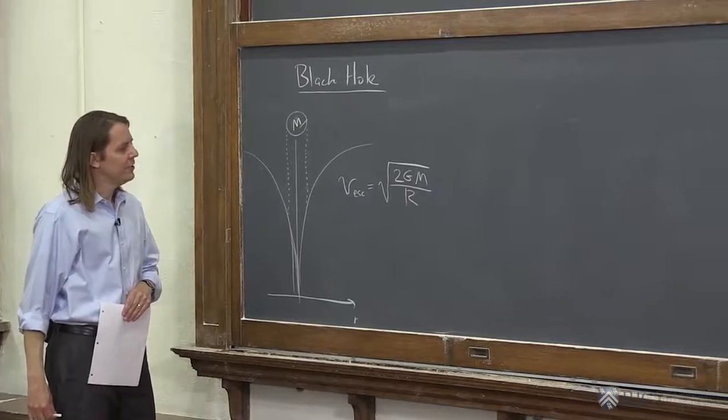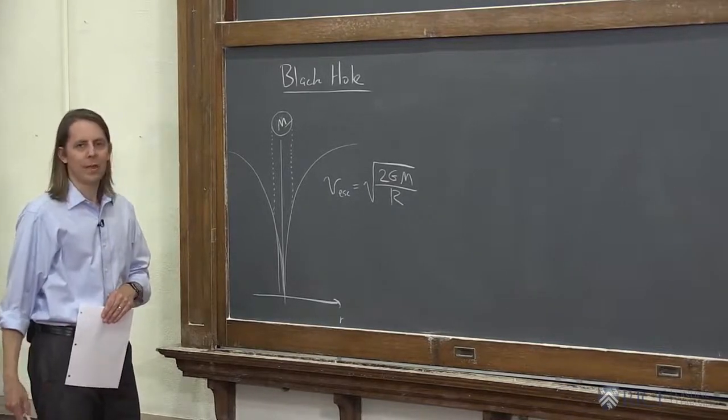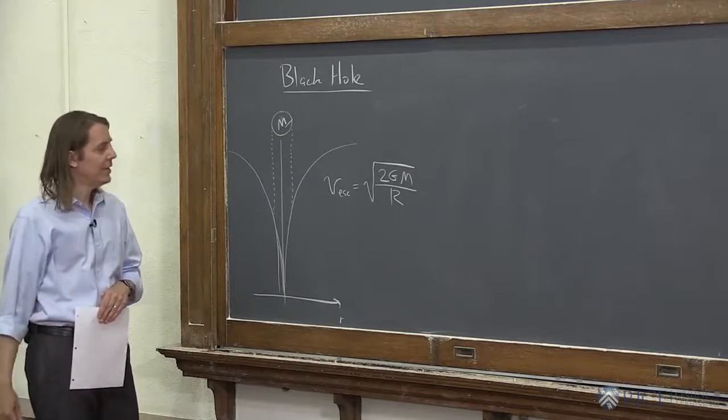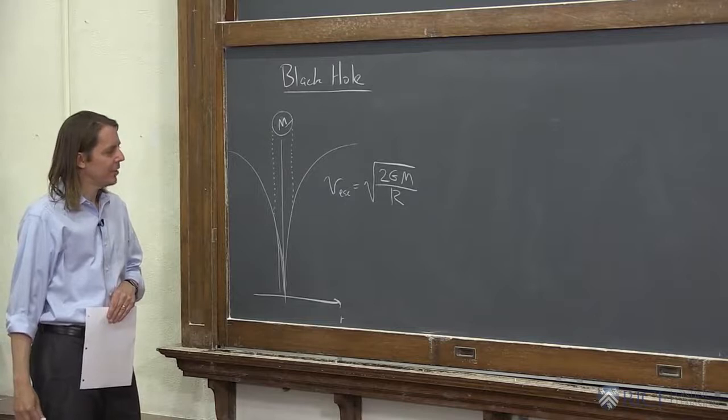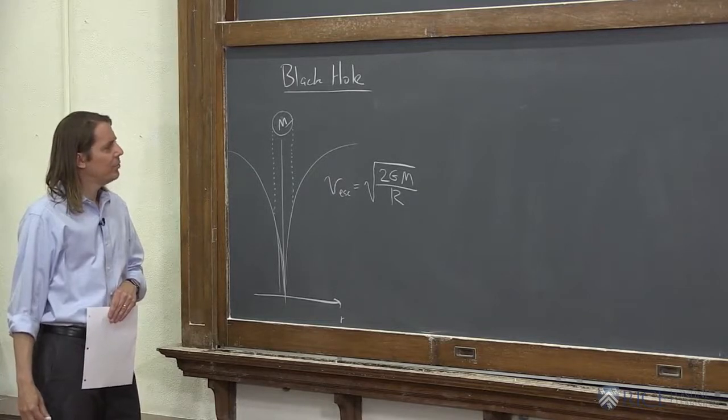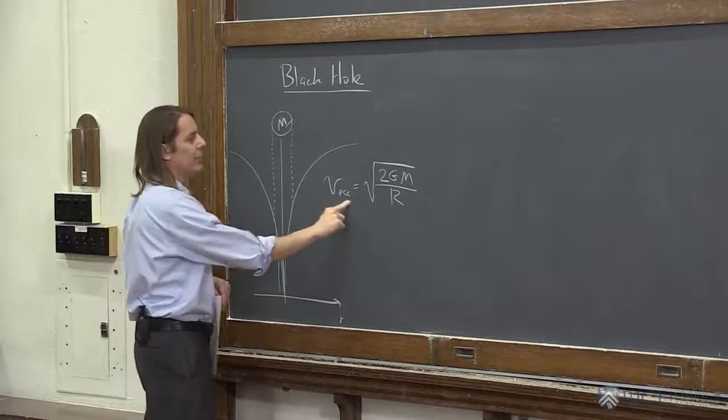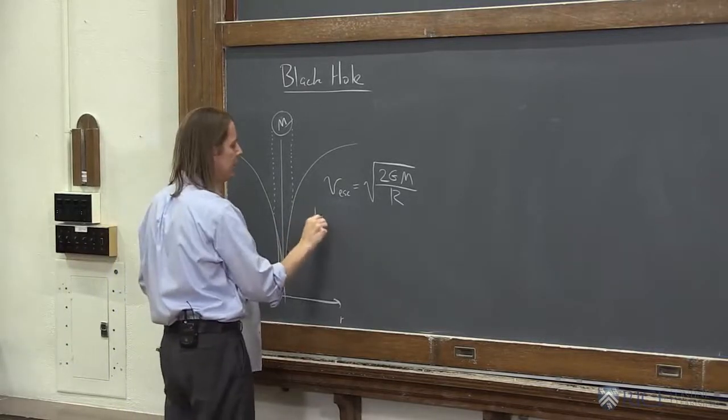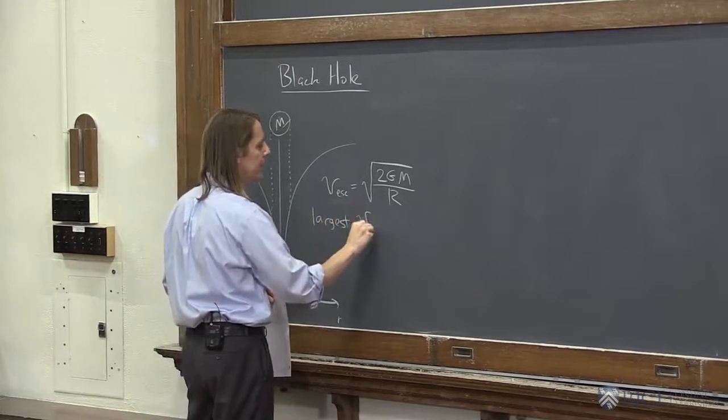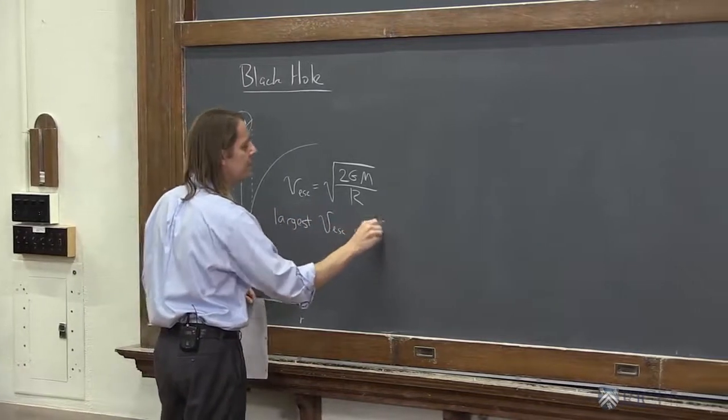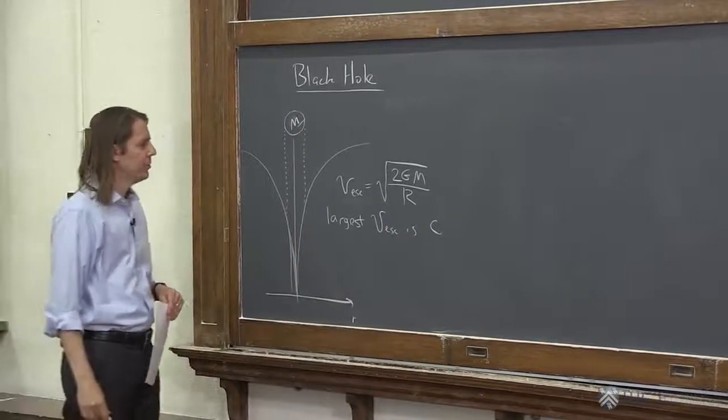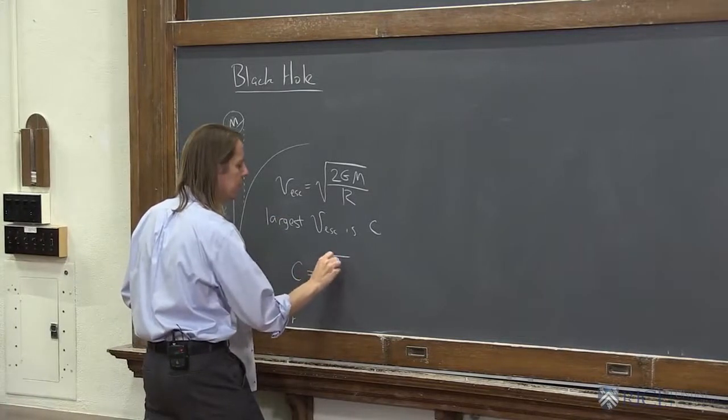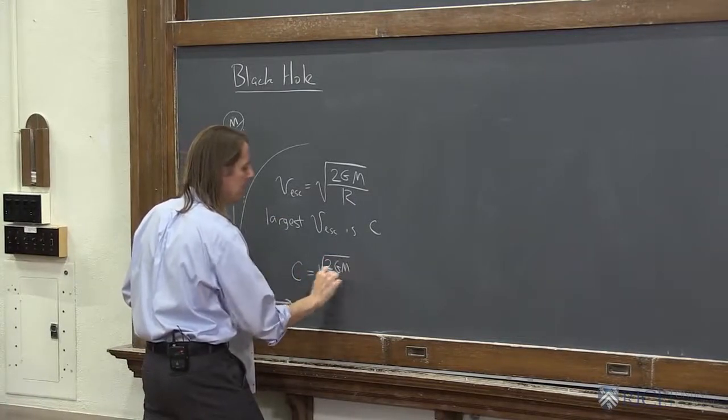Now, another part of physics is you can't always go faster and faster and faster. There's a limit to how fast you can go, right? The speed of light. The fastest thing in the universe is light. The speed of light, 3 times 10 to the 8 meters per second. So it would seem reasonable then to say you can't go as fast as you want. Your escape velocity can only go to the speed of light. So the largest v escape is c. And c is what we call, is the symbol used for the speed of light. So we can say c equals the square root of 2 big gm over r.